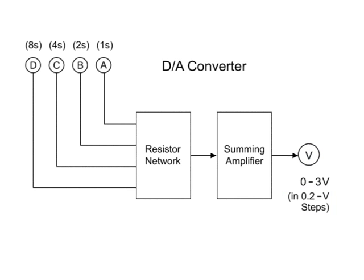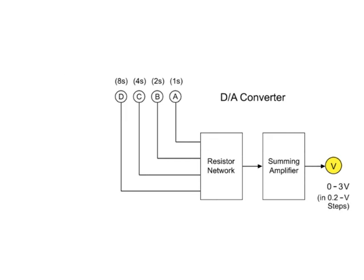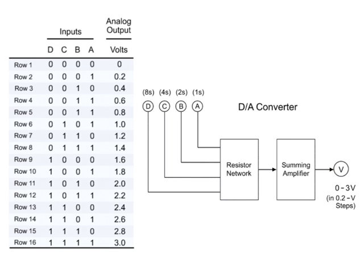Consider the possible binary inputs at D, C, B, and A, and the corresponding voltage output based on the following truth table. Keep in mind that the inputs going from A to D have increasing significance.